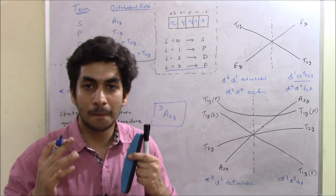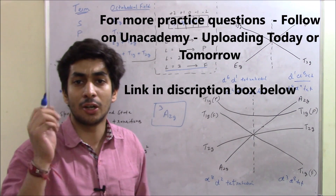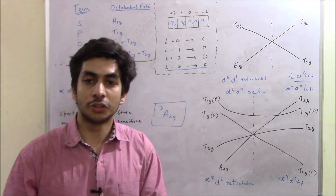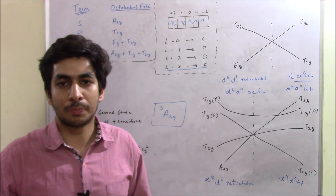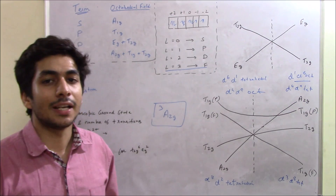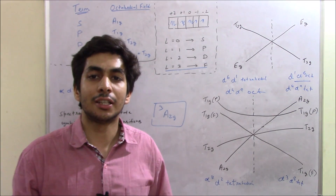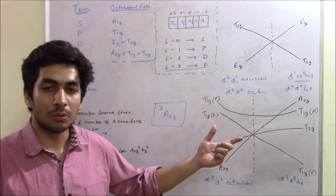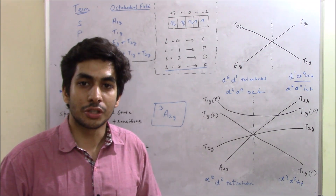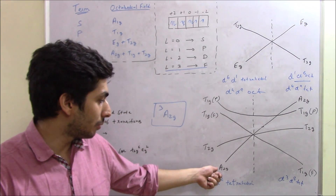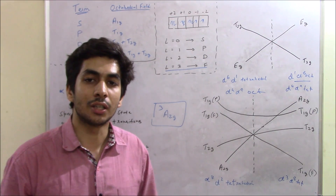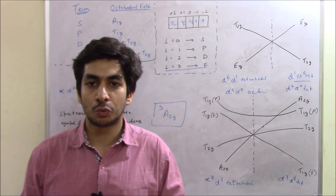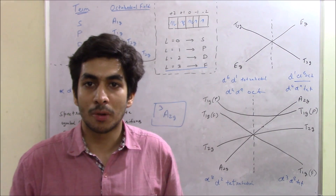These are very easy questions from Orgel diagrams. Sometimes they also ask which transition corresponds to the lowest energy or highest wavelength — in a D2 tetrahedral system that would be A2G → T2G. I hope you can now solve such questions. Please give feedback if you liked this video, share it with friends, and thank you so much for watching.